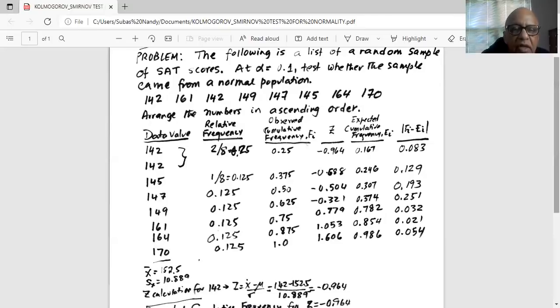Now the next column is relative frequency. Notice there are eight data points out of which 142 appears two times, 2 out of 8 is 0.25. The next one, 145, is 1 out of 8, 0.125. Relative frequency means how many times each number appears in the data set. 147 is 0.125 and the rest are all 0.125.